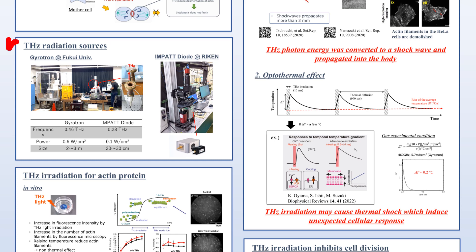In our experiment, we used two radiation sources. One is a gyrotron. We reduced the power and irradiated the sample with a large beam spot. The beam was chopped for 10 ms with a duty cycle of 1% to prevent temperature rise.